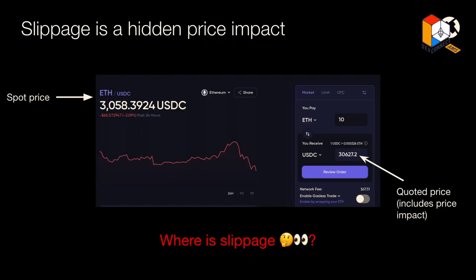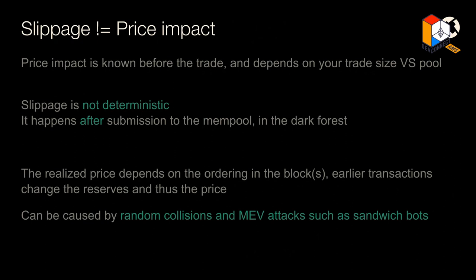We want to talk about slippage and give hard numbers on that. There's a lot of misconception about what slippage is. When you go to a DEX interface — like Matcha displayed here — you typically see different numbers: a spot price, which is the mid-market, and a quoted price which includes price impact but does not include slippage. That's the key message: slippage is not shown in pretty much any DEX UI.